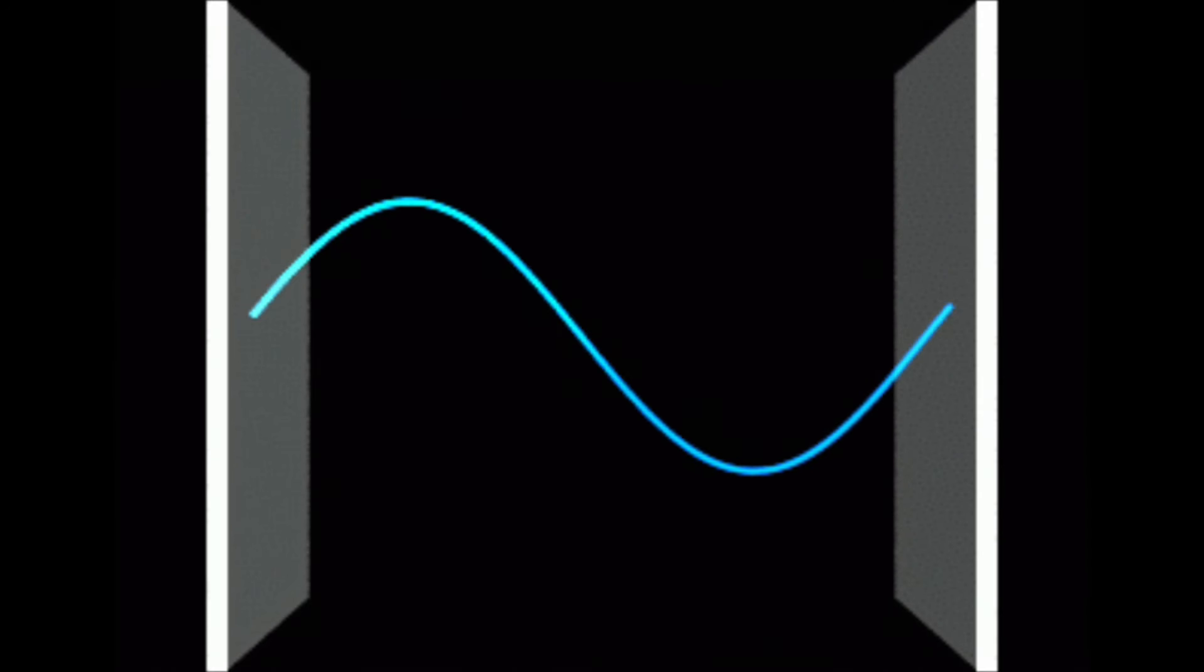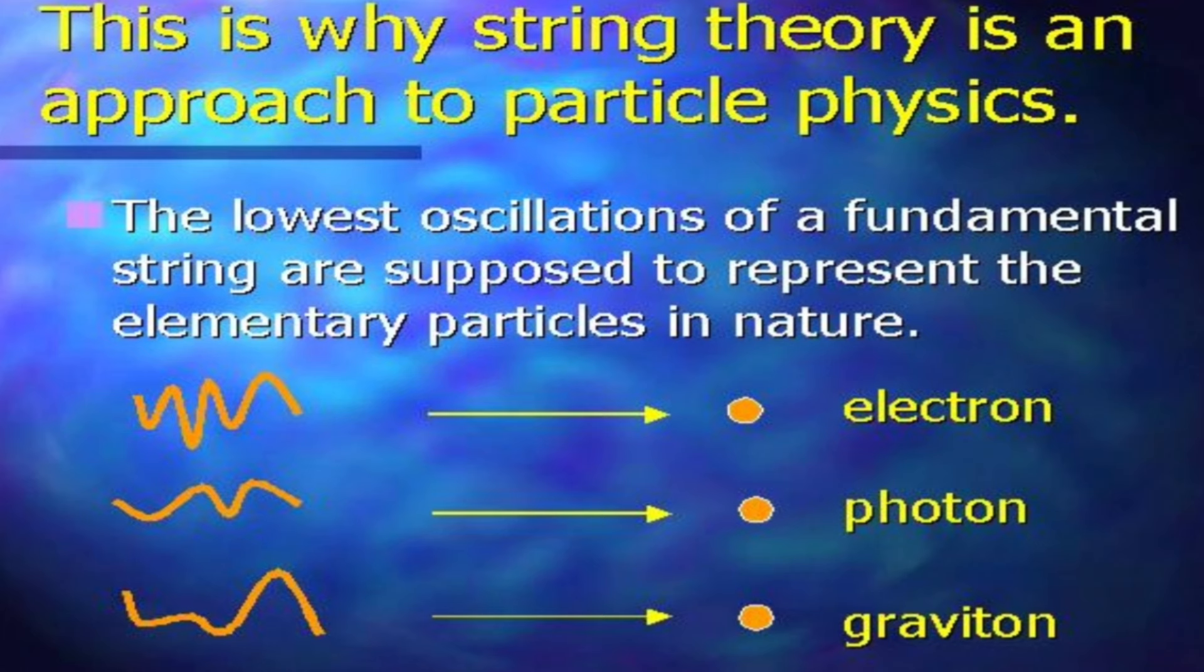Depending on how they vibrate, they produce different kinds of particles, such as quarks, leptons, photons, and even gravitons, the hypothetical particles that carry the force of gravity.